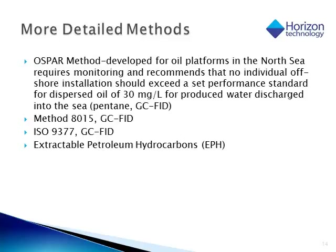Oil and grease measurement has started as a base for more detailed methods that use more specific detectors to better understand the characteristics of the hydrocarbons extracted. For example, there's an OSPAR method used for oil platforms in the North Sea, which uses GC-FID and pentane for extraction — very similar to hexane. There's also US EPA Method 8015, which uses GC with an FID detector. ISO 9377 is again very similar. And there's extractable petroleum hydrocarbon analysis, which fractionates hydrocarbons into aromatic and non-aromatic, so you can get a better idea of the toxicity of the general measurement.